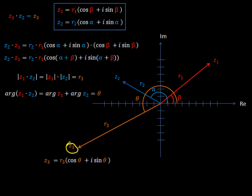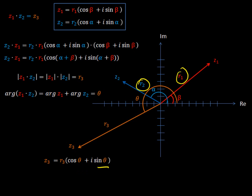So the new z, z3, comes from multiplying r1 and r2 together. Whatever the lengths are — maybe 3 and 4 or whatever — you multiply them together. And then for the angle, you just take whatever alpha and beta are, add them together, and that's your new angle. So it's really kind of simple. But in order to get that simplicity, we had to go through some messy algebra and a little bit of trigonometry — multiply them all together, collect your terms, recognize the neat connection through the trigonometric identities, and you get a nice simple formula. Add the angles, multiply the lengths, and you're done.